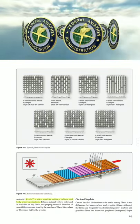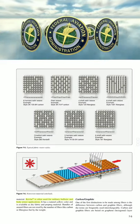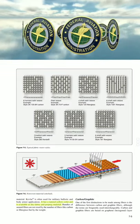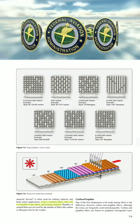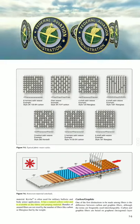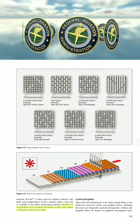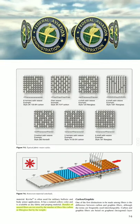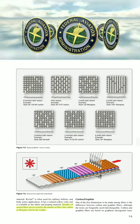Kevlar® is often used for military ballistic and body armor applications. It has a natural yellow color and is available as dry fabric and prepreg material. Bundles of aramid fibers are not sized by the number of fibers like carbon or fiberglass, but by weight.